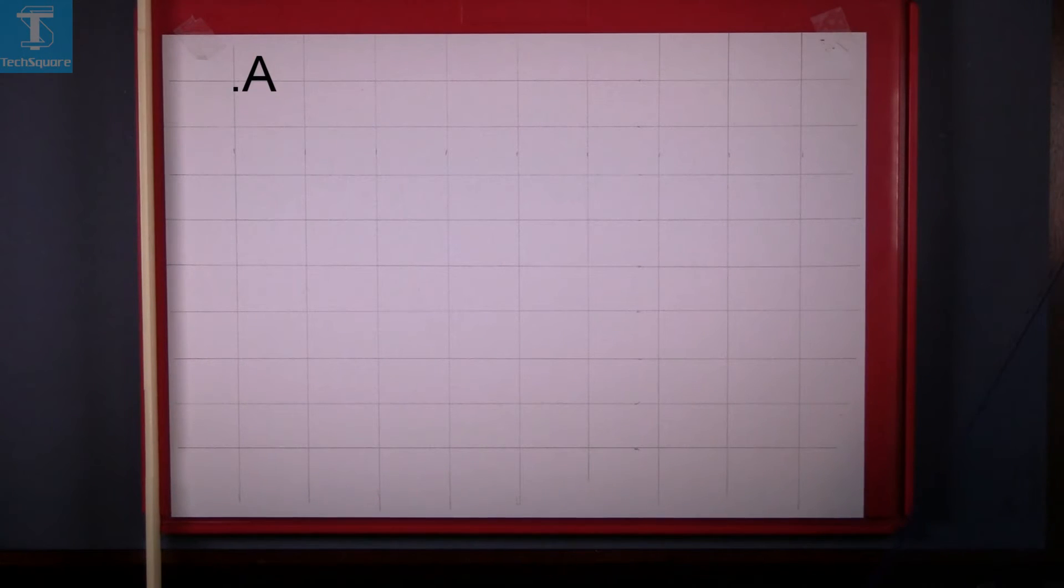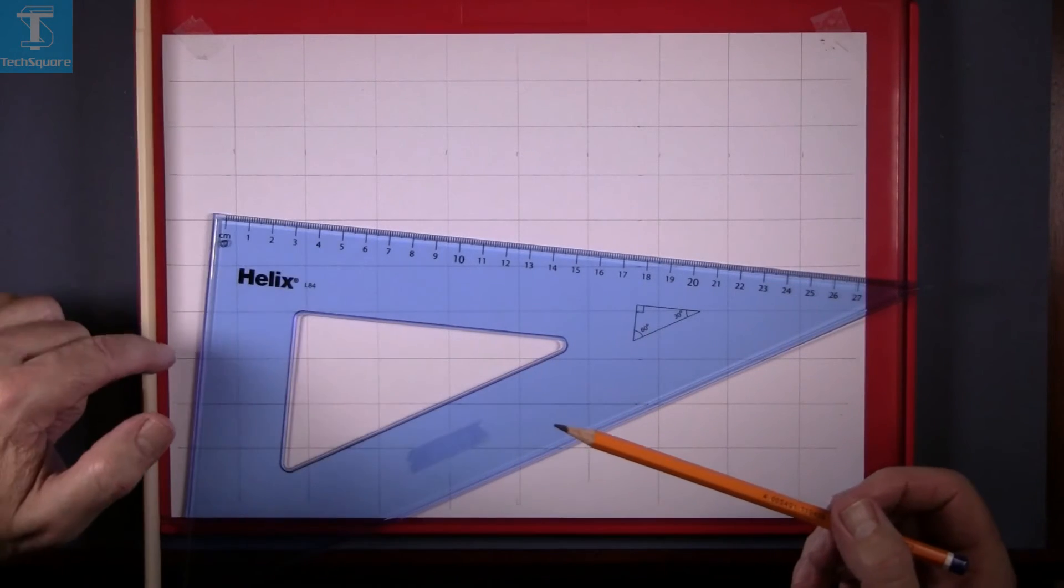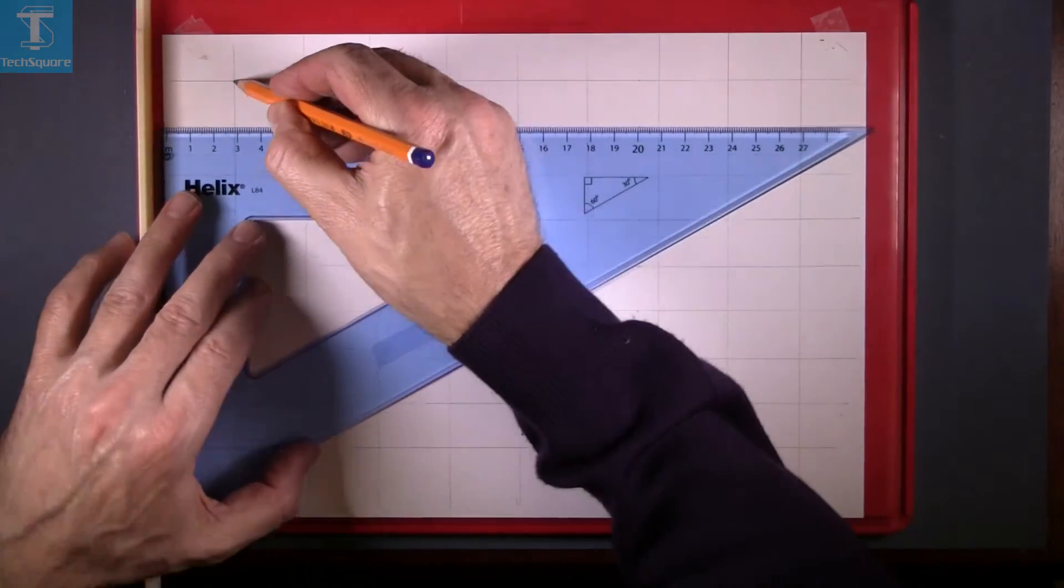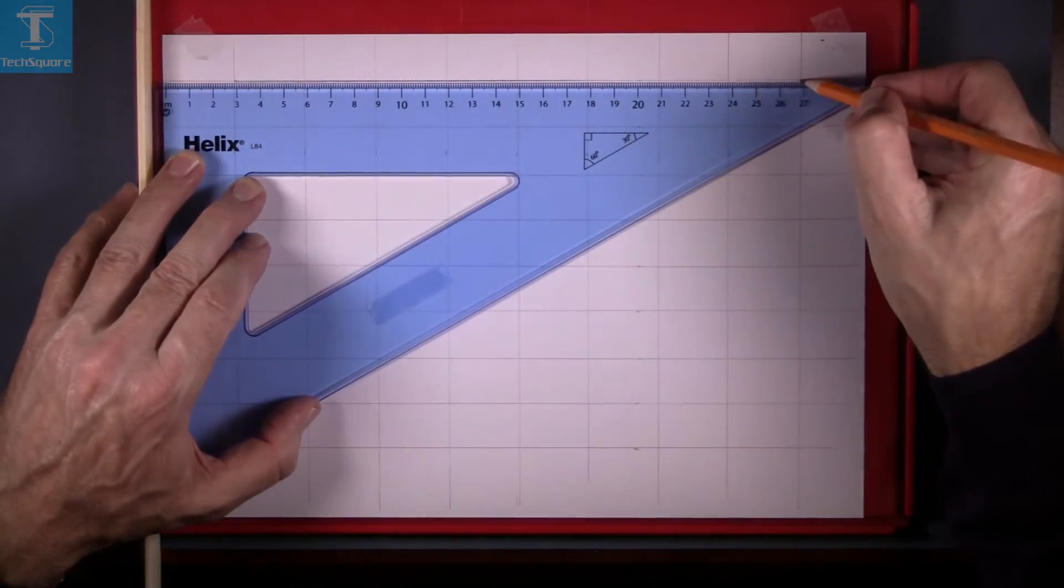Now our next exercise is to join A to B, B to C, C to D, and D to A. So with the set square against the guide rule again, start off from where point A was to point B.